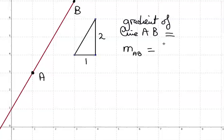And it equals two divided by one. It's the distance up or down divided by along. So it's two divided by one, and of course that's just two. So the gradient of this line is two.